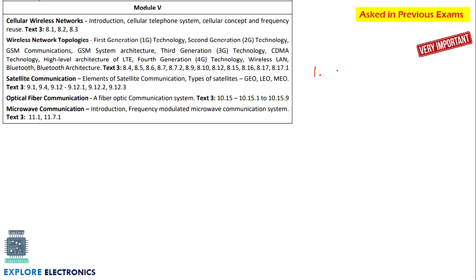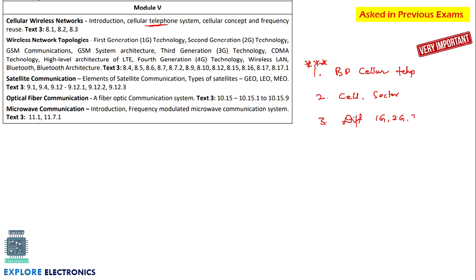Coming to Module 5, it is very easy to predict the questions. The first important topic is the block diagram or diagram of the cellular telephone system. The concept of cell, frequency reuse, and what is a sector may also come — this is very very important. Out of these two, one question will be there. They may also ask the differences between 1G, 2G, 3G, and 4G — bandwidth and facilities. One question is also there on the high-level architecture of LTE, from GSM to LTE, as seen in the model question paper.